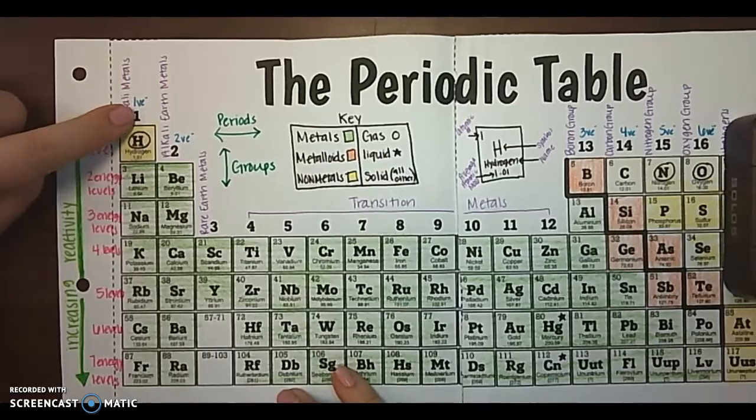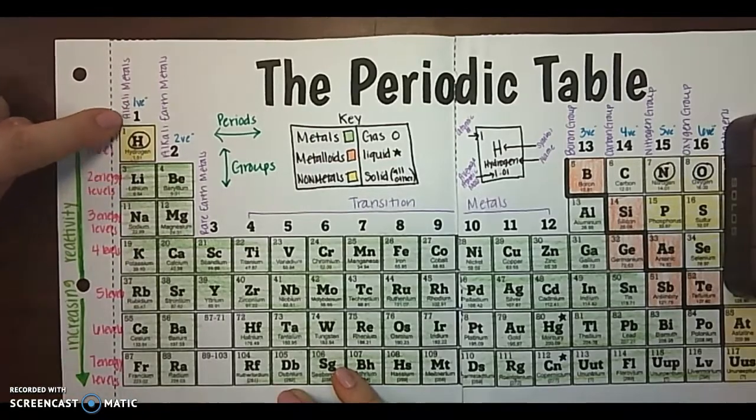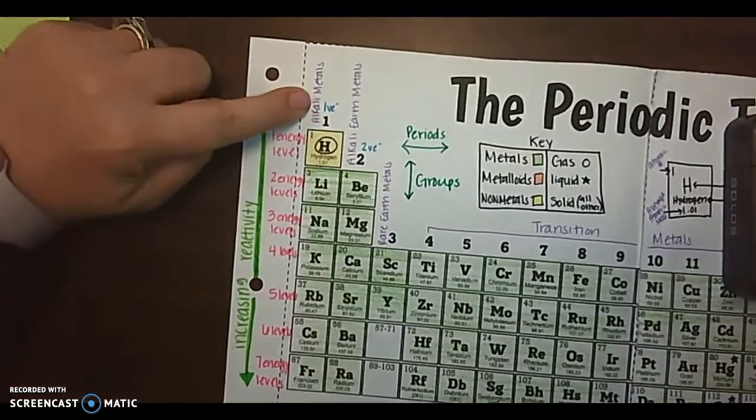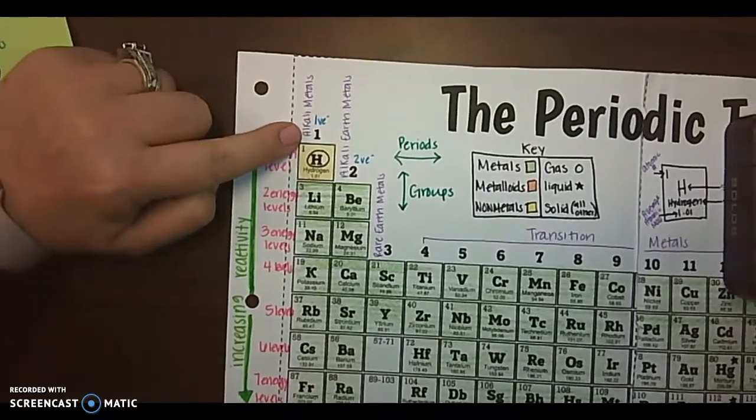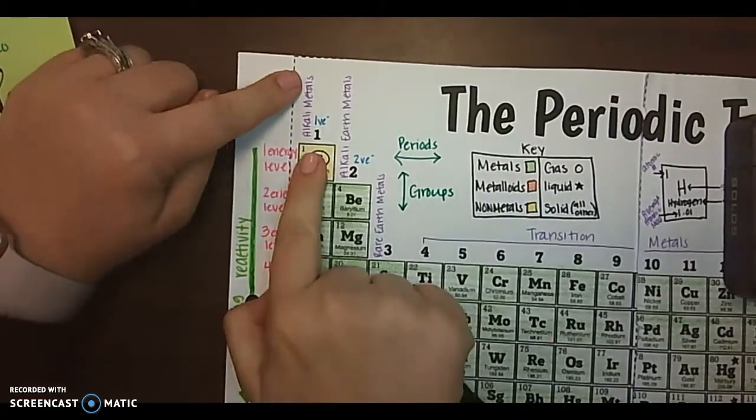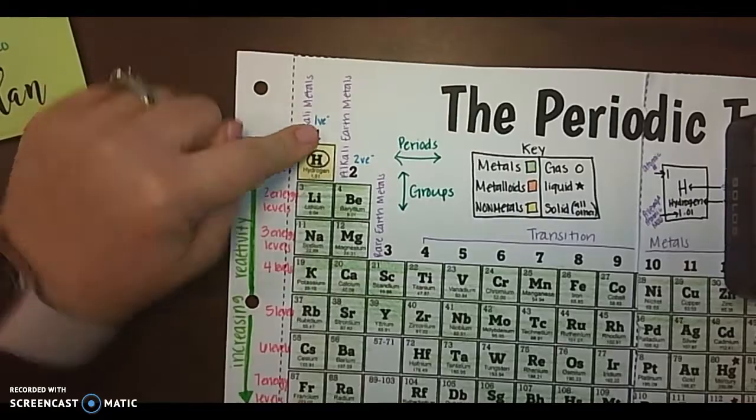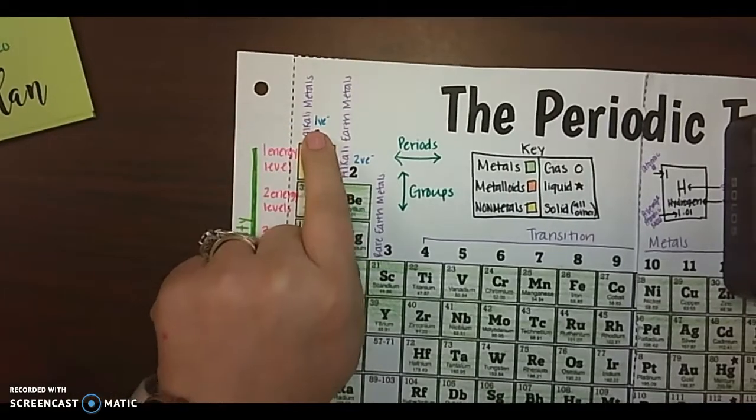Now we know that group number one is called the alkali metals. So we're going to label alkali metals. And we know that all elements in group number one have one valence electron.